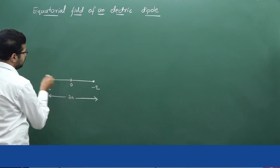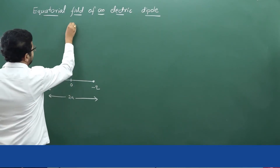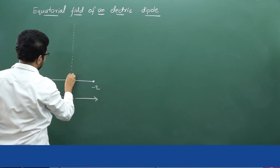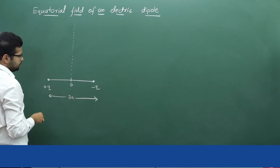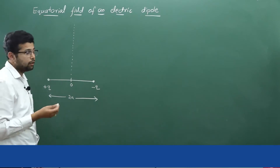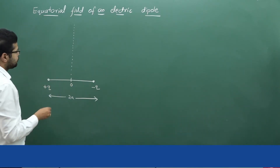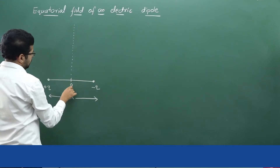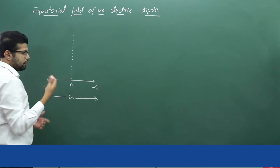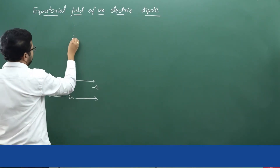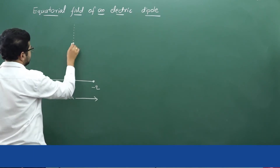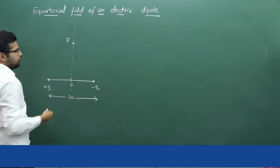There is a center of the dipole O. If you consider a straight line which is perpendicular to the dipole length and passing through the center of the dipole, then we call it the axial line or the equatorial line of an electric dipole. We have to calculate the equatorial field, meaning the electric field defined at a point. Therefore, we should consider a point on the equatorial line of an electric dipole — this is the point where we want to calculate the electric field.